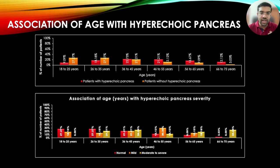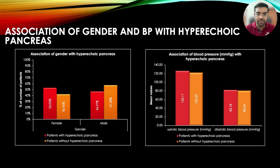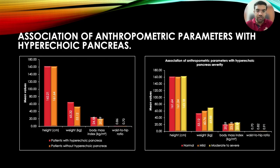Results. Age was positively correlated with presence and severity of hyperechoic pancreas. No association was found with gender or blood pressure, in contrast to previous studies which showed that male gender and hypertension were associated with hyperechoic pancreas.